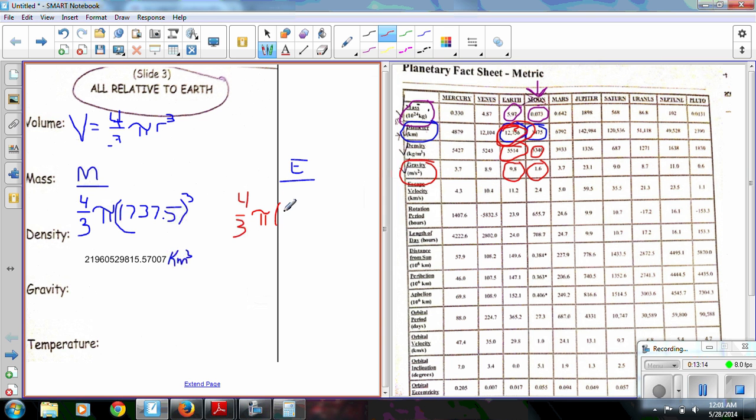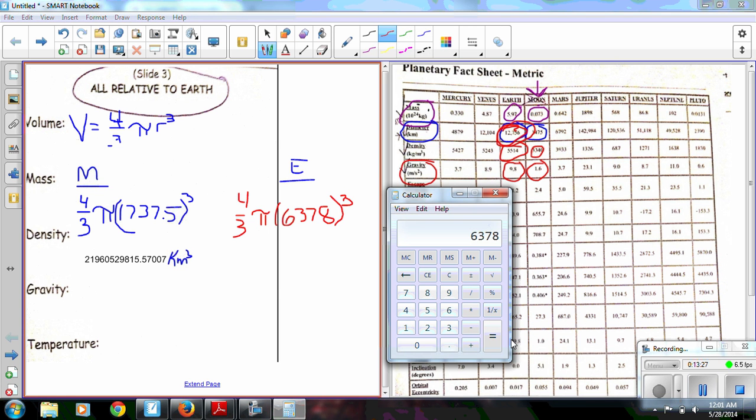So I'm going to continue. 6378. Now you guys will have calculators, so you can do your own calculations on your planets. So let me get my calculation here.